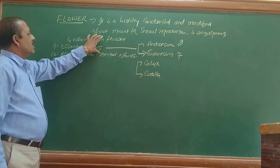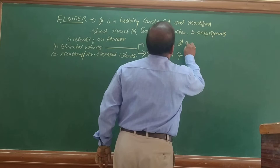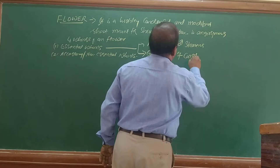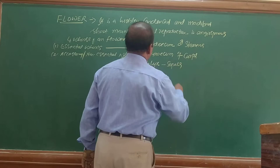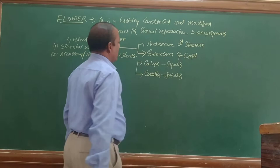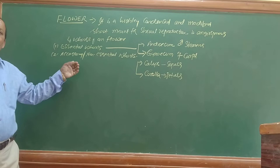The essential whorls are involved in sexual reproduction. In the accessory or non-essential whorls, calyx consists of sepals and corolla consists of petals.